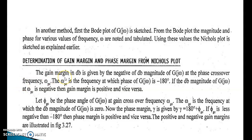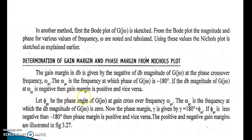The gain margin in decibel is given by the negative of the dB magnitude of G(jω) at the phase crossover frequency ω_PC. ω_PC is the frequency at which G(jω) is minus 180 degrees. If the dB magnitude of G(jω) at ω_PC is negative, then the gain margin is positive, and vice versa.